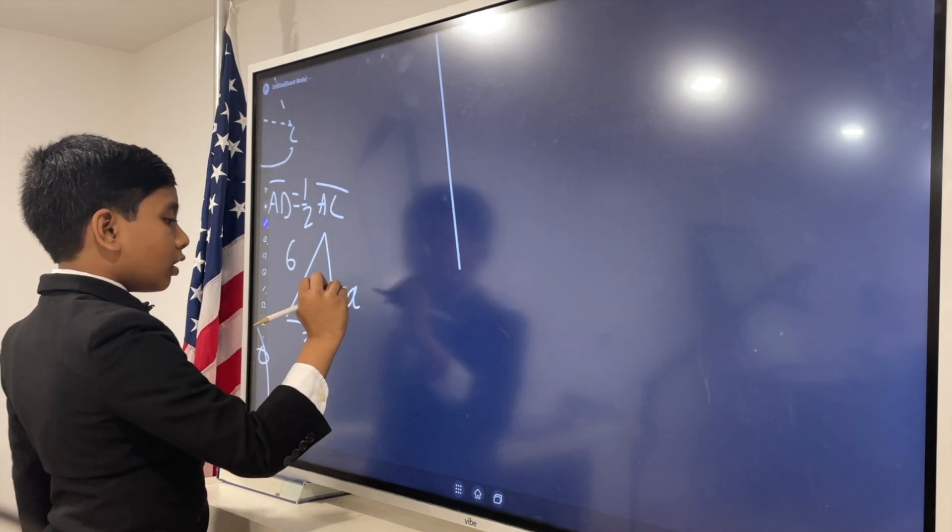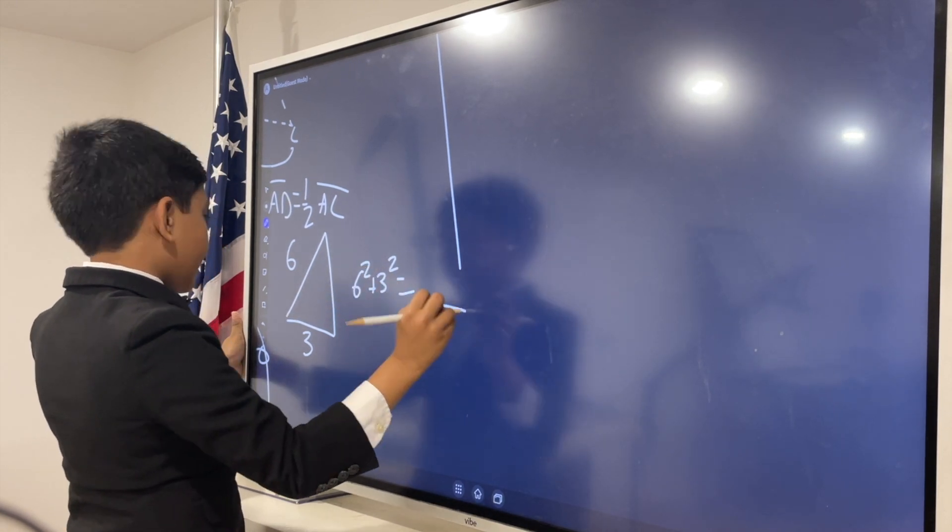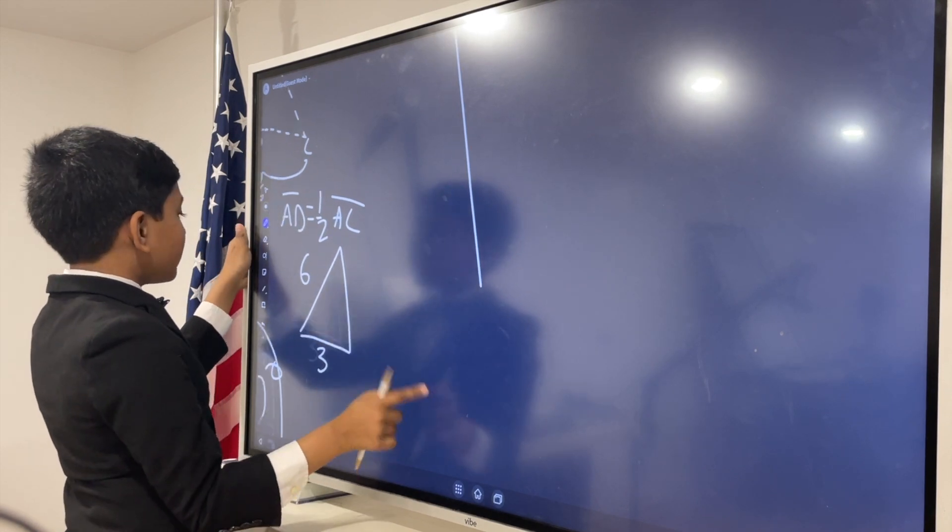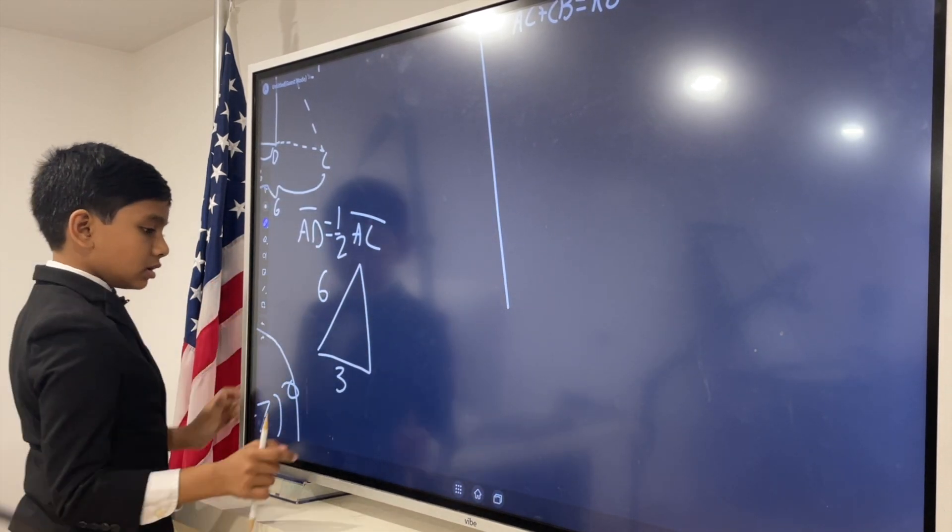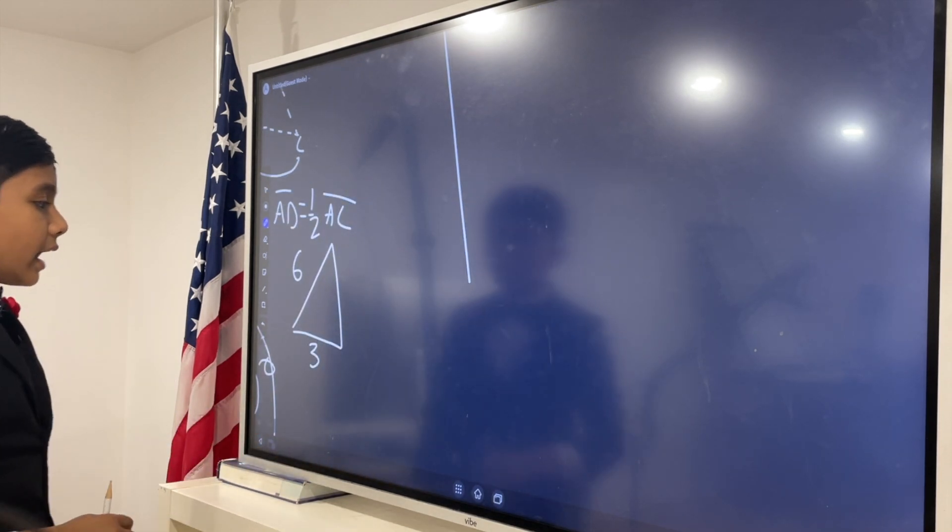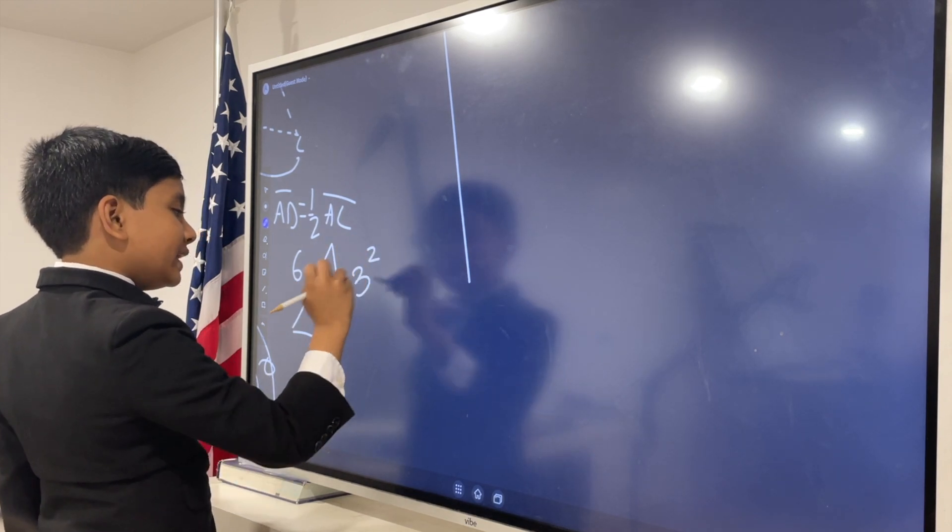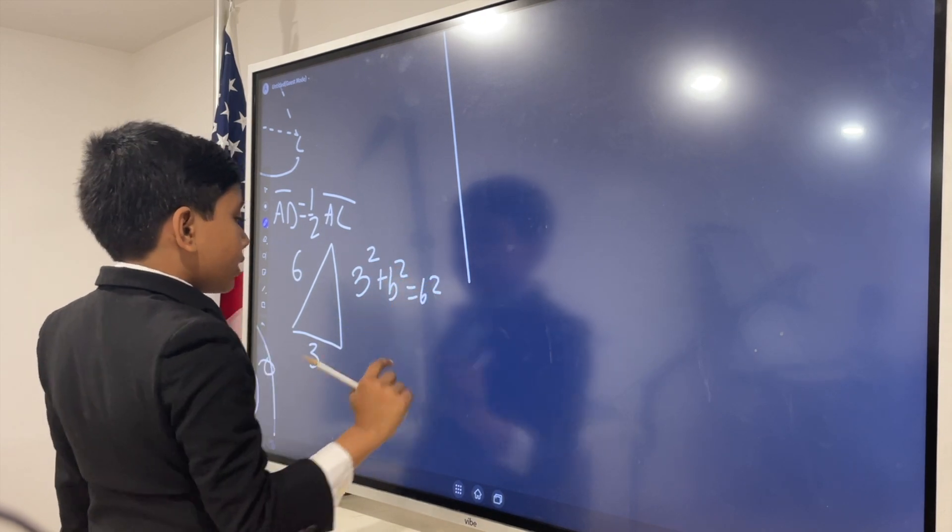However, we can't go 6 squared plus 3 squared. That wouldn't work. Because, C has to be the hypotenuse. And we already know what the hypotenuse is: 6. So, now, we are going to say that B is the missing side. So, 3 squared plus B squared equals 6 squared.